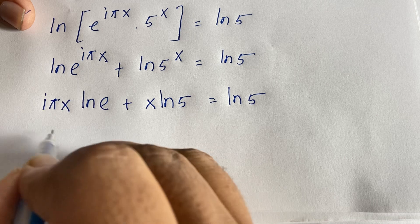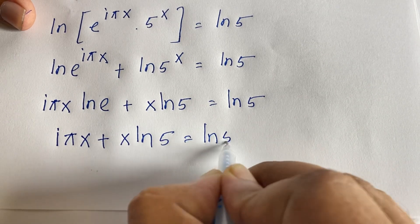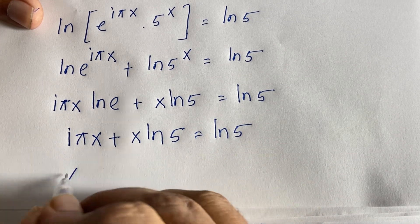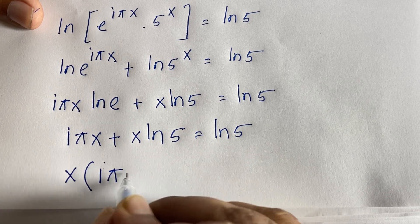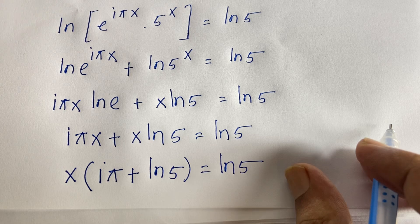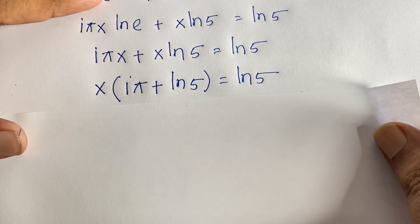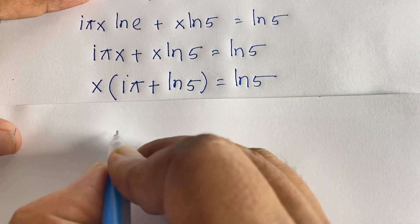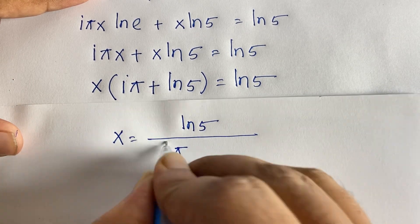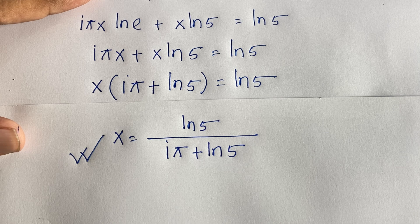Since ln(e) = 1, we get iπx + x·ln(5) = ln(5). Factoring out x: x(iπ + ln5) = ln5. Therefore, x = ln5 / (iπ + ln5). This is our answer for Method 1.